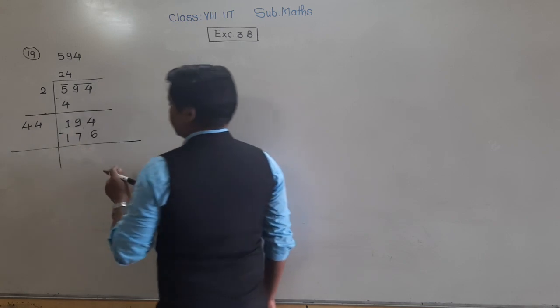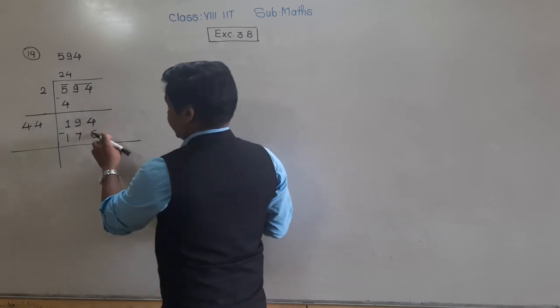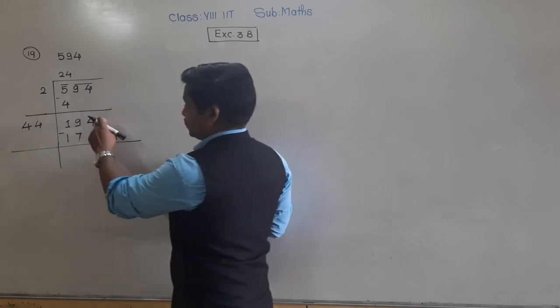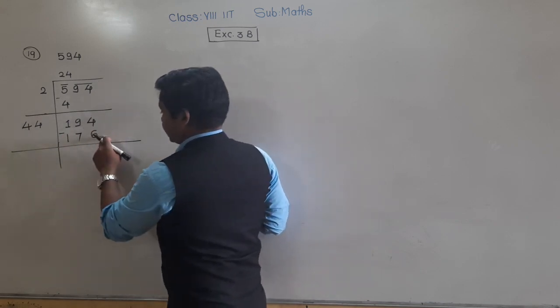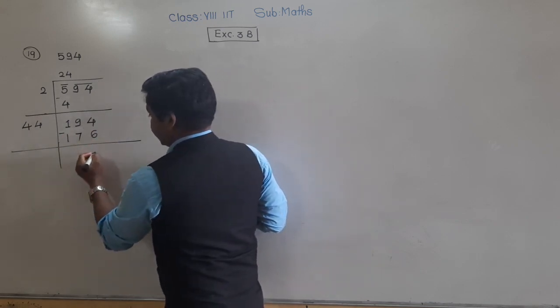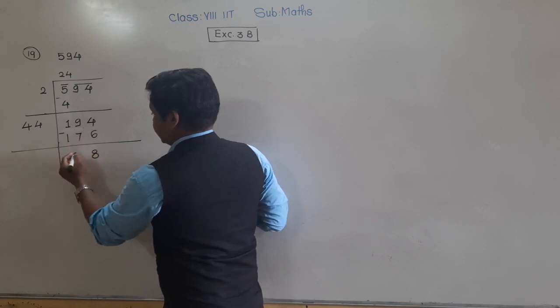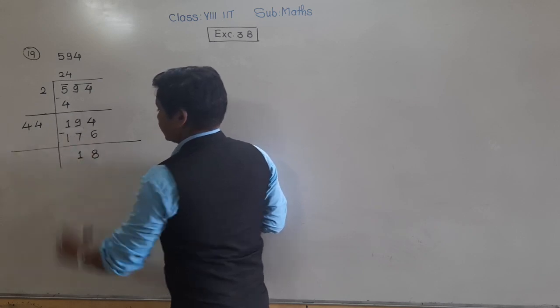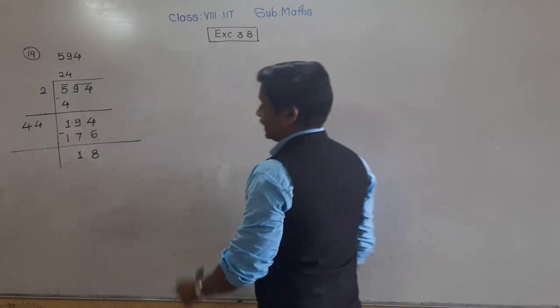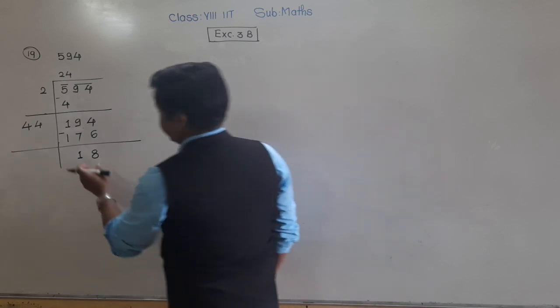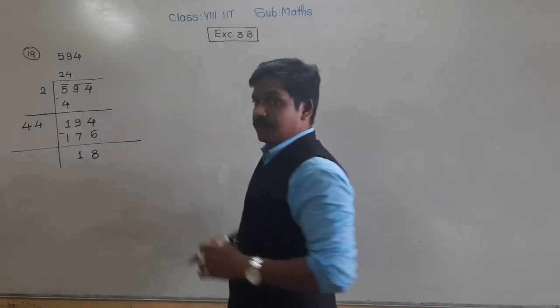Subtract this: 4 minus 6 is not possible, so 40 minus 6 is 8 and 9 minus 8 is 1 and 1 minus 1 is 0. The remainder here is 18.